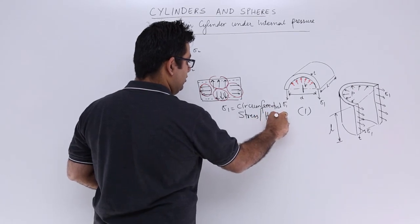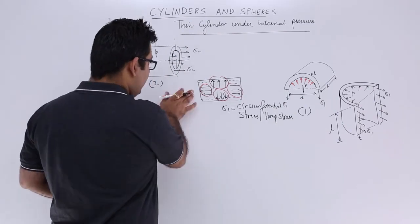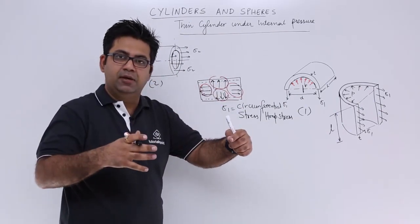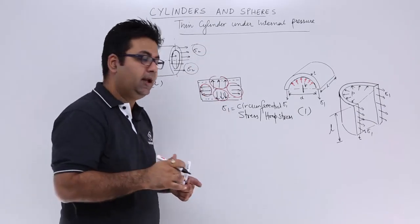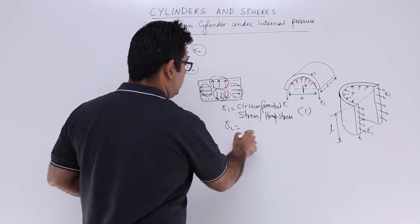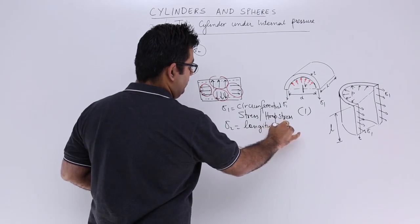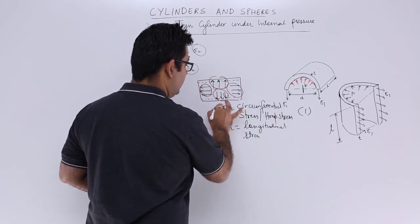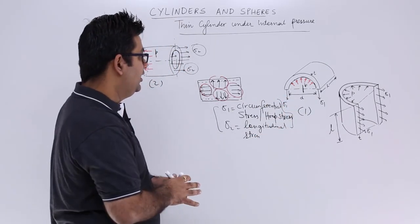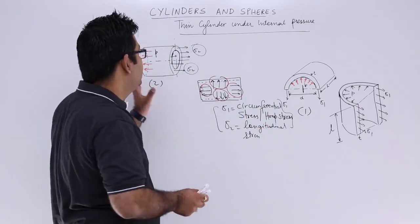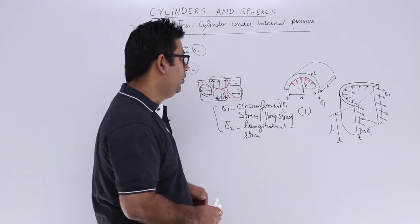Sigma 1 is also known as hoop stress. The longitudinal elongation is resisted by sigma 2, which is called the longitudinal stress. This is a very important point to understand: due to the application of internal pressure inside a thin cylinder, two stresses are produced — one is circumferential or hoop stress, and the second is longitudinal stress.